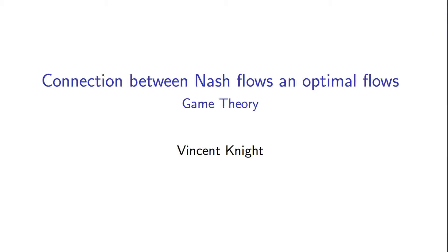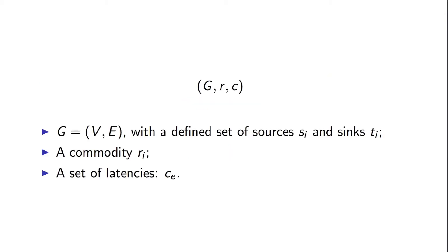This final video will look at the connection between Nash flows and optimal flows. We've seen previously that to define a routing game we need a graph with a set of sources and sinks, a commodity r_i that's the amount of traffic that has to go from every source to every sink, and a set of latencies.